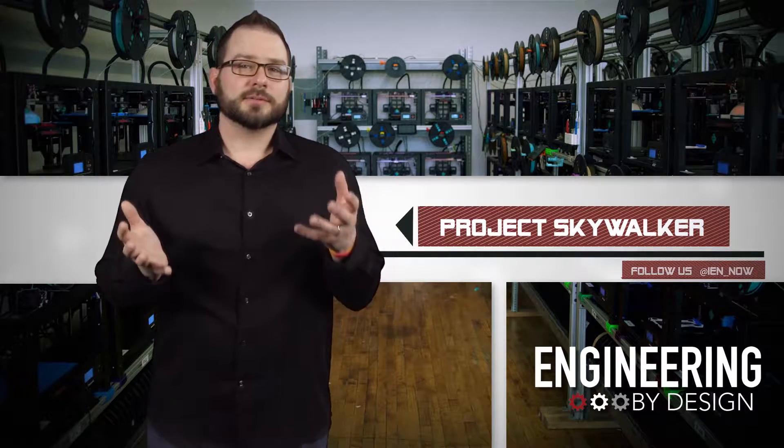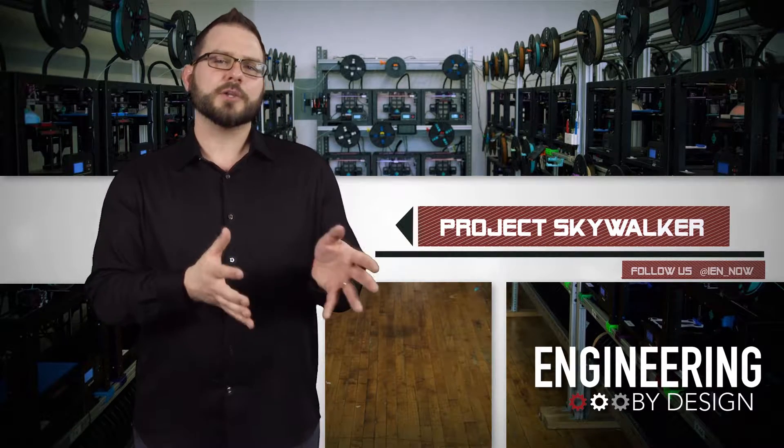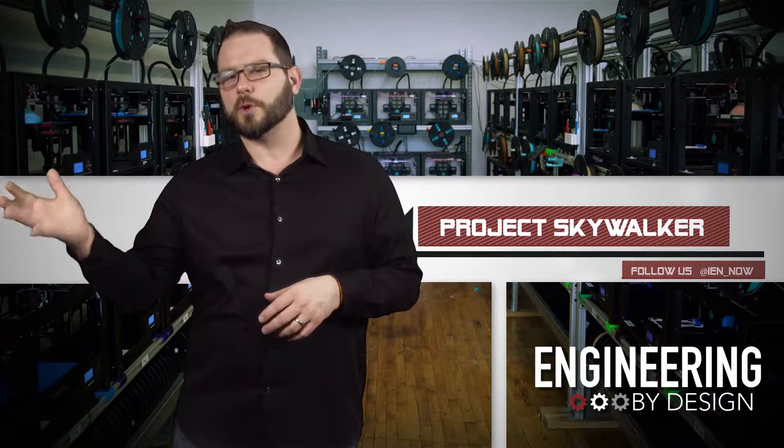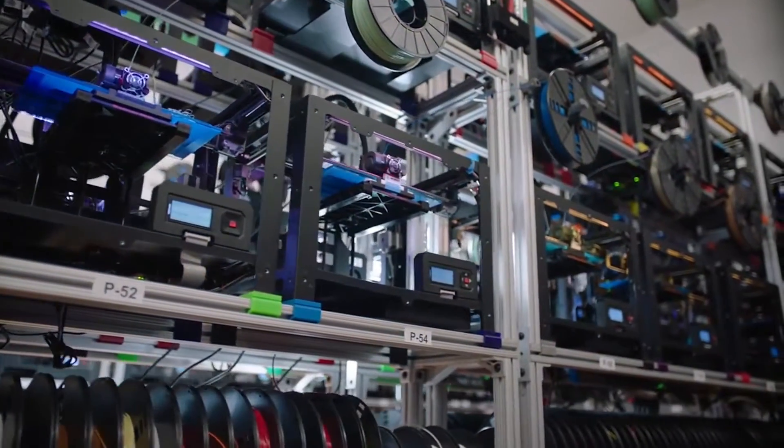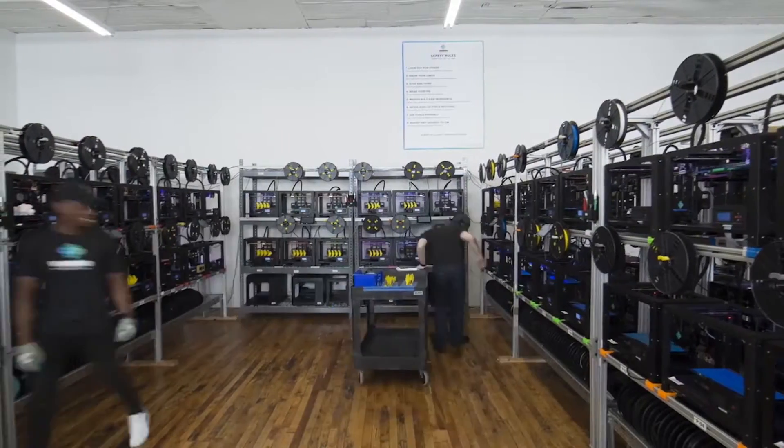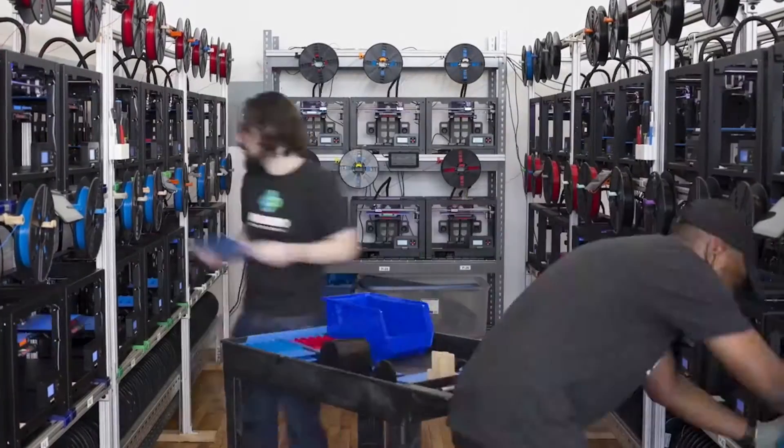But it's essentially a rack of 3D printers tended by a UR10 robotic arm from Universal Robots. Right now the 2,000 square foot 3D printer factory floor uses 160 3D printers for part production.